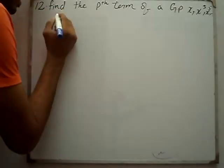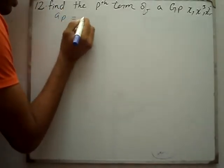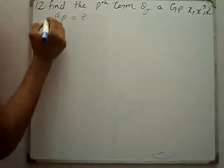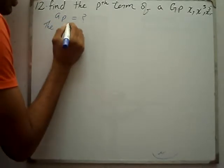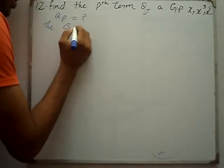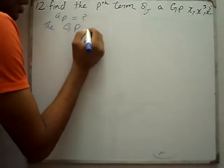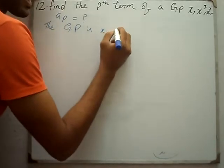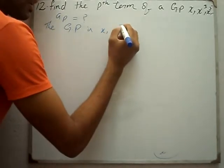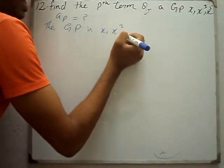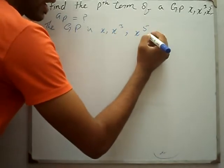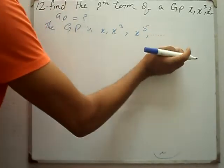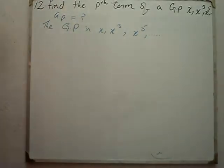Can I find it? This is a geometric progression. The geometric progression is x, x³, x⁵, and so on. It is a geometric progression.